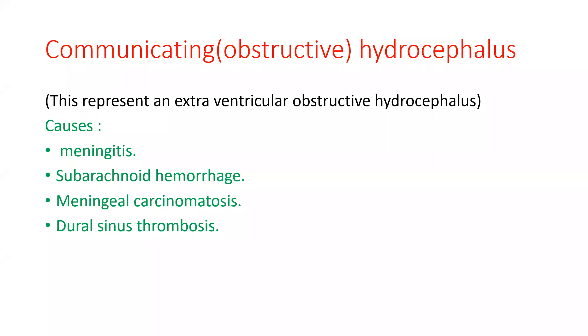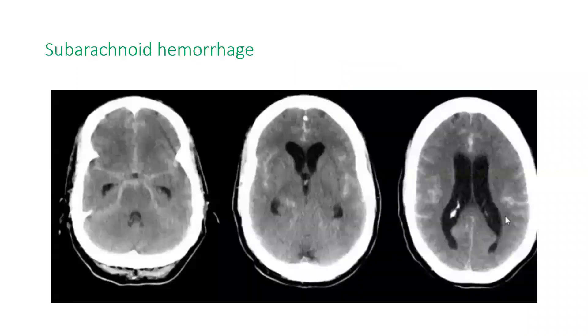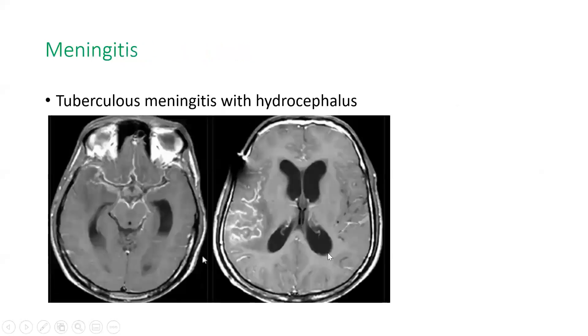Communicating or non-obstructive hydrocephalus represents extraventricular obstructive hydrocephalus. Causes include meningitis, subarachnoid hemorrhage, meningeal carcinomatosis, and dural sinus thrombosis. The obstruction is beyond the fourth ventricle, either in the basal cisterns or arachnoid villi. In subarachnoid hemorrhage, destruction of the arachnoid villi causes defective CSF absorption, resulting in supratentorial and infratentorial hydrocephalus. Enhancement of meninges with hydrocephalus is seen in meningitis.